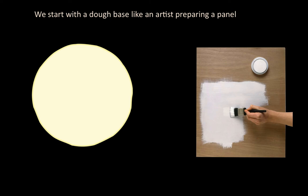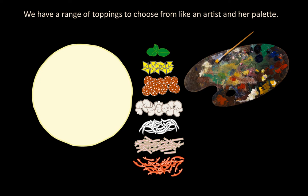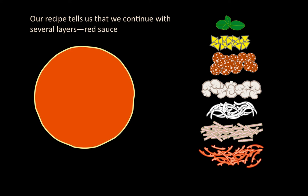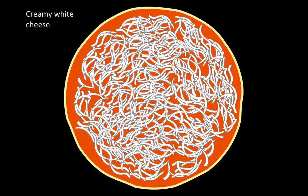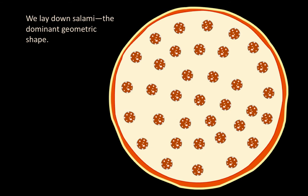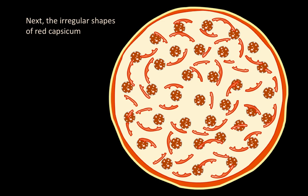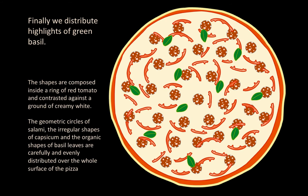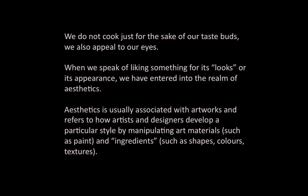We start with a dough base, like an artist preparing a panel. We have a range of toppings to choose from, like an artist and her palette. Our recipe tells us to continue with several layers: red sauce, creamy white cheese, salami as the dominant geometric shape, then the irregular shapes of red capsicum, and finally highlights of green basil. The shapes are composed inside a ring of red tomato, contrasted against a ground of creamy white. The geometric circles of salami, the irregular shapes of capsicum, and the organic shapes of basil leaves are carefully and evenly distributed over the whole surface of the pizza.